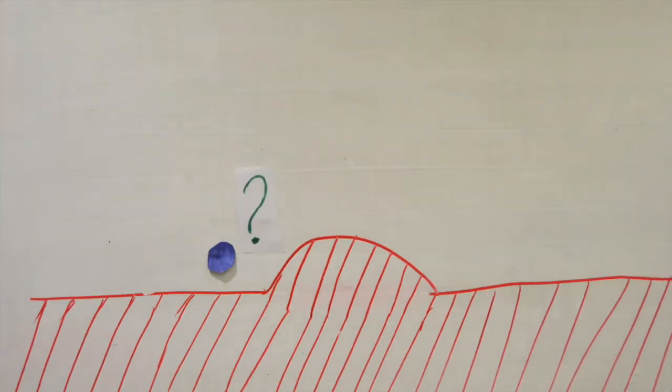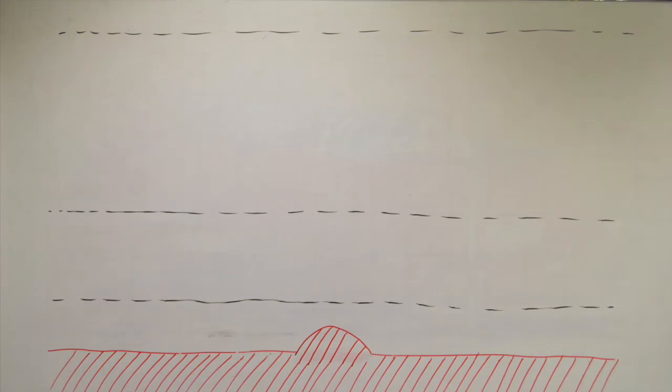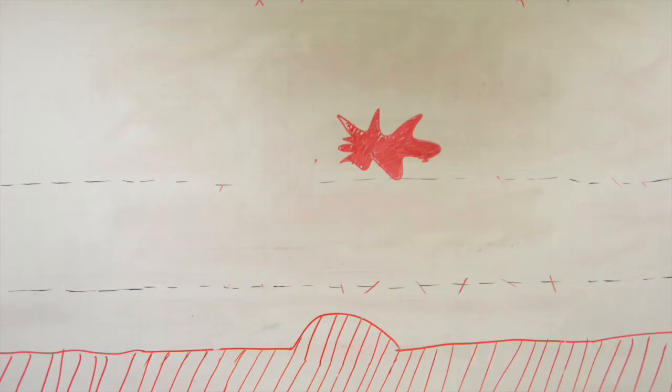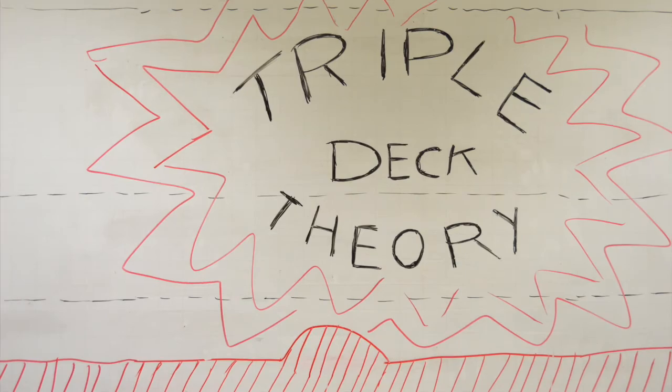But what happens if there is a bump on the wing? For example, this could be a rivet that keeps the wing together. Mathematically, we have to separate the flow in three layers or decks. This method of solution is called triple deck theory.